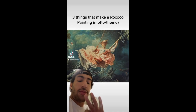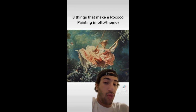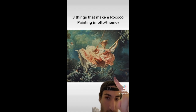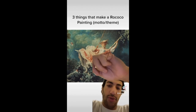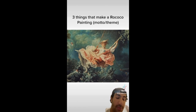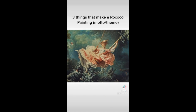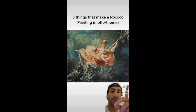I believe three things make a Rococo painting a Rococo painting. One: ornaments. In this painting you can see an ornament right there, and there's also an ornament right next to the girl's foot. Two: the love, nature, and playfulness atmosphere. You can see that a lot in this painting — the nature behind the girl swinging, and a man she's kicking her shoe at. That's playfulness. Love — her husband or someone who clearly loves her is pushing her on the swing.